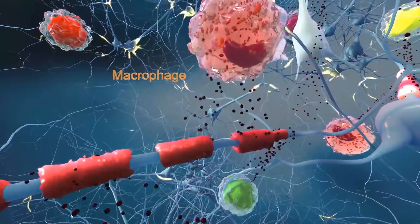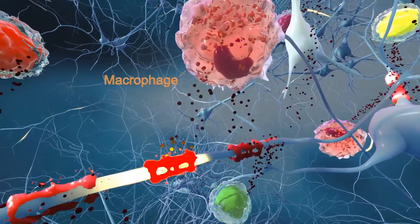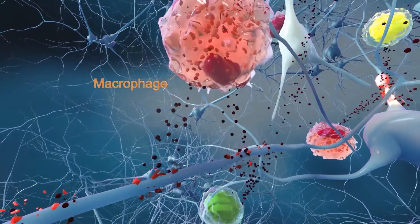Multiple sclerosis, or MS, is a disease in which the immune system, which normally helps to protect us from infections, cancer, and other dangers, launches an attack against a patient's nervous tissue in the brain and spinal cord.